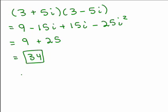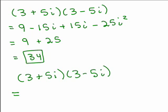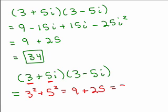Here's the shortcut: that's your a, and that's your b. It ends up being the squares of those two numbers added together, so 3 squared plus 5 squared. It ends up being just 9 plus 25, or 34.